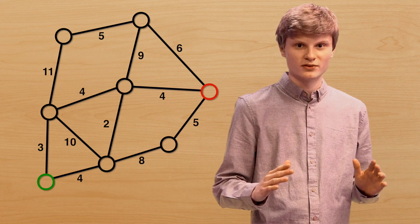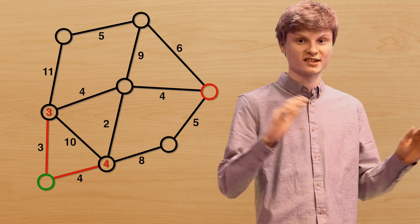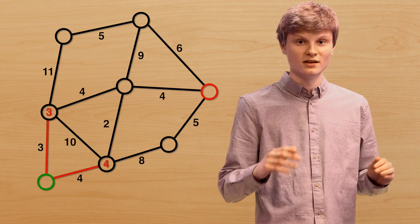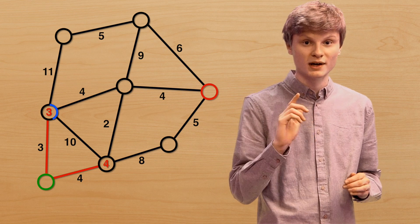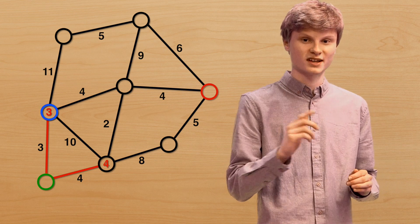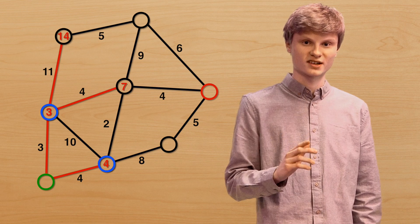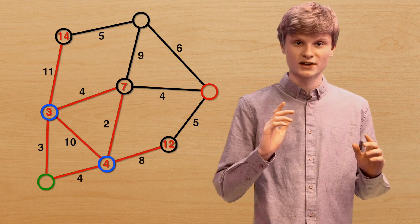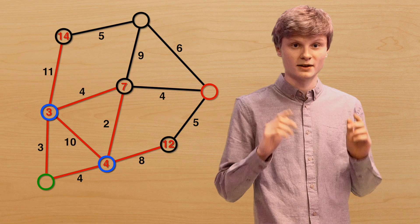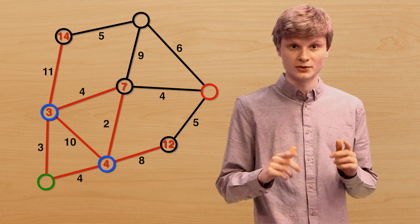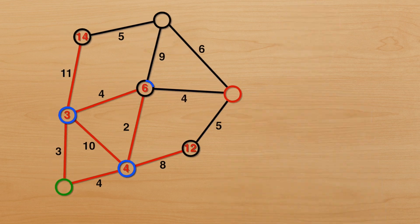Dijkstra's algorithm, like a BFS, branches out to all adjacent nodes. However, it selects the node with the shortest path to the starting point, which guarantees the overall shortest path. If it comes across a node that it's already seen, it updates its value only if the new path is shorter than the old one.